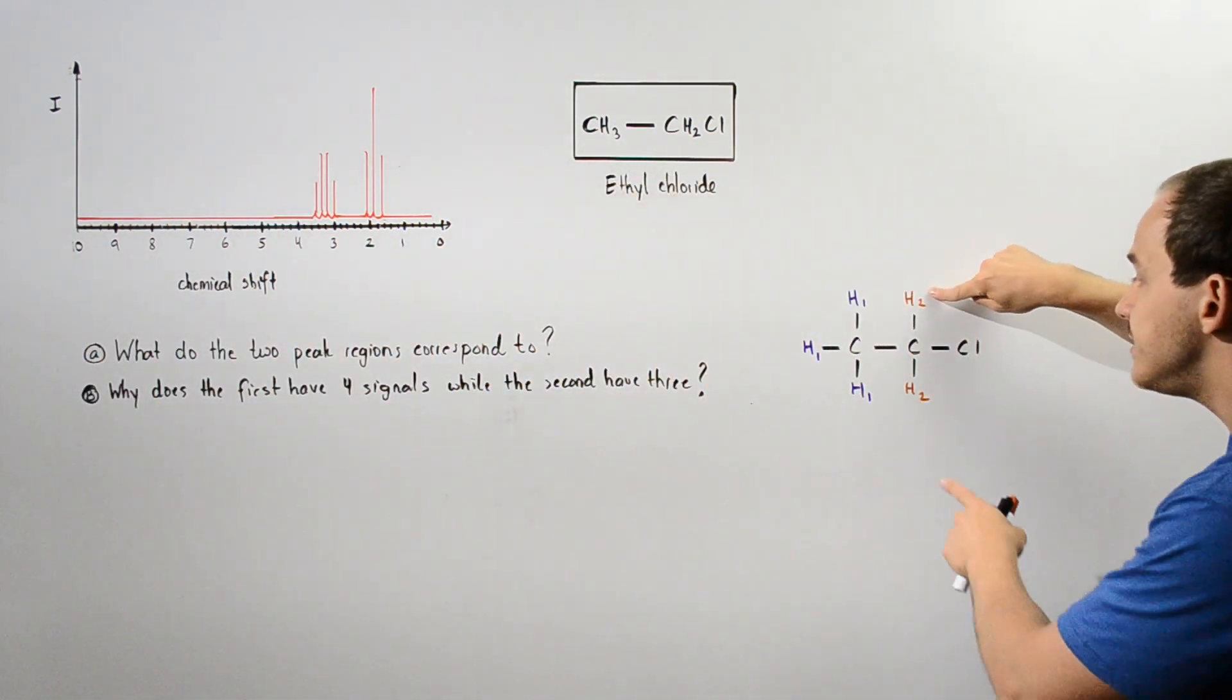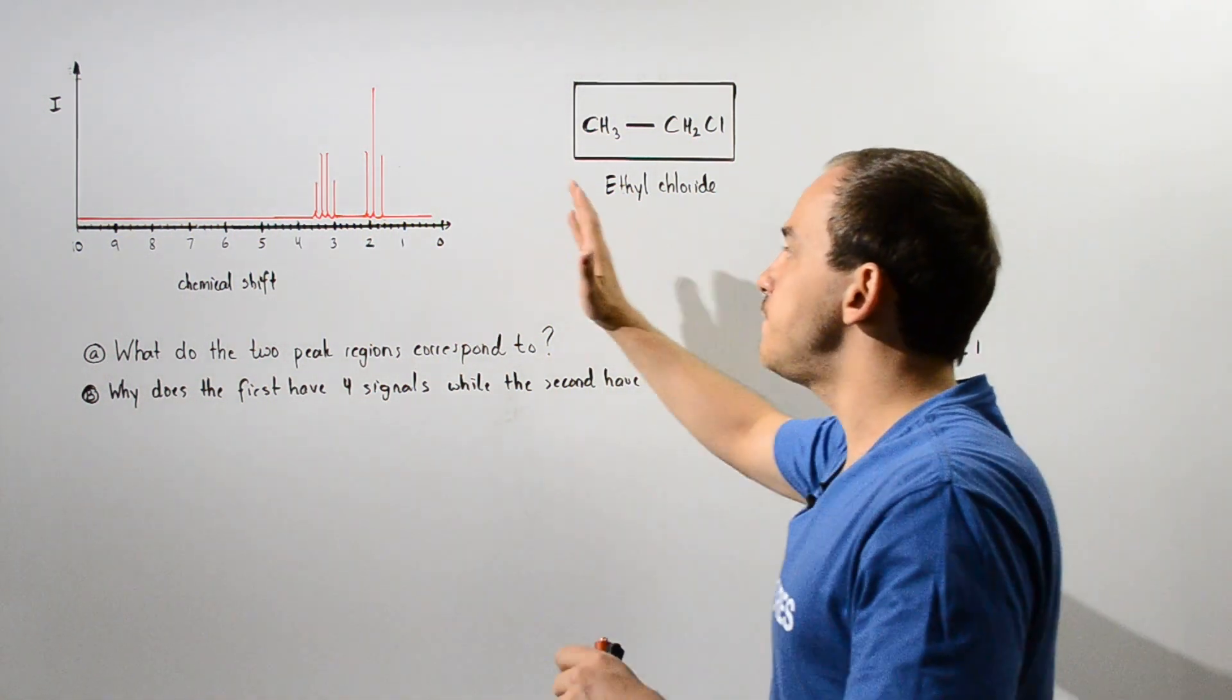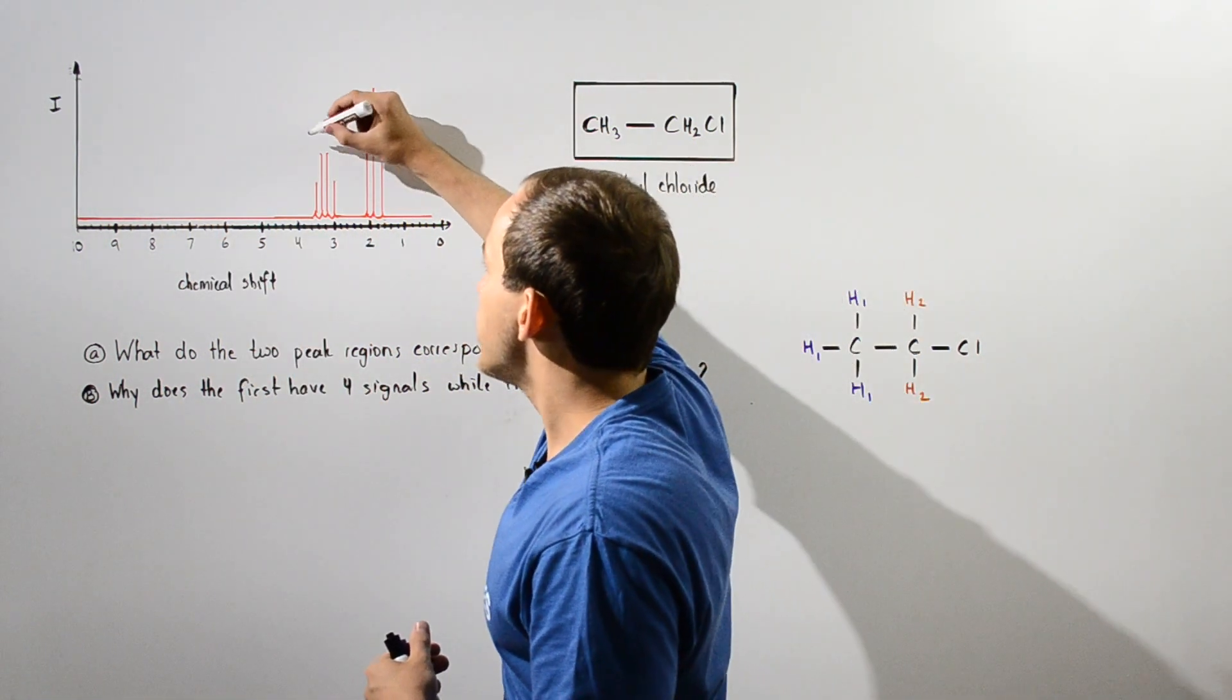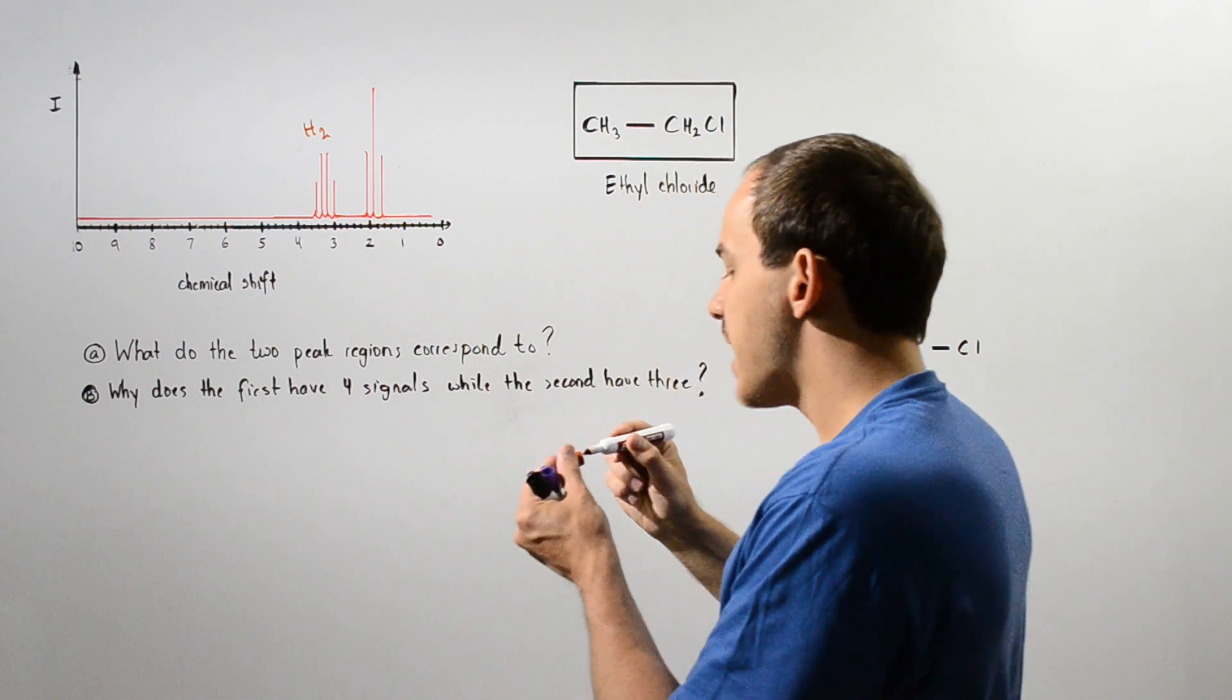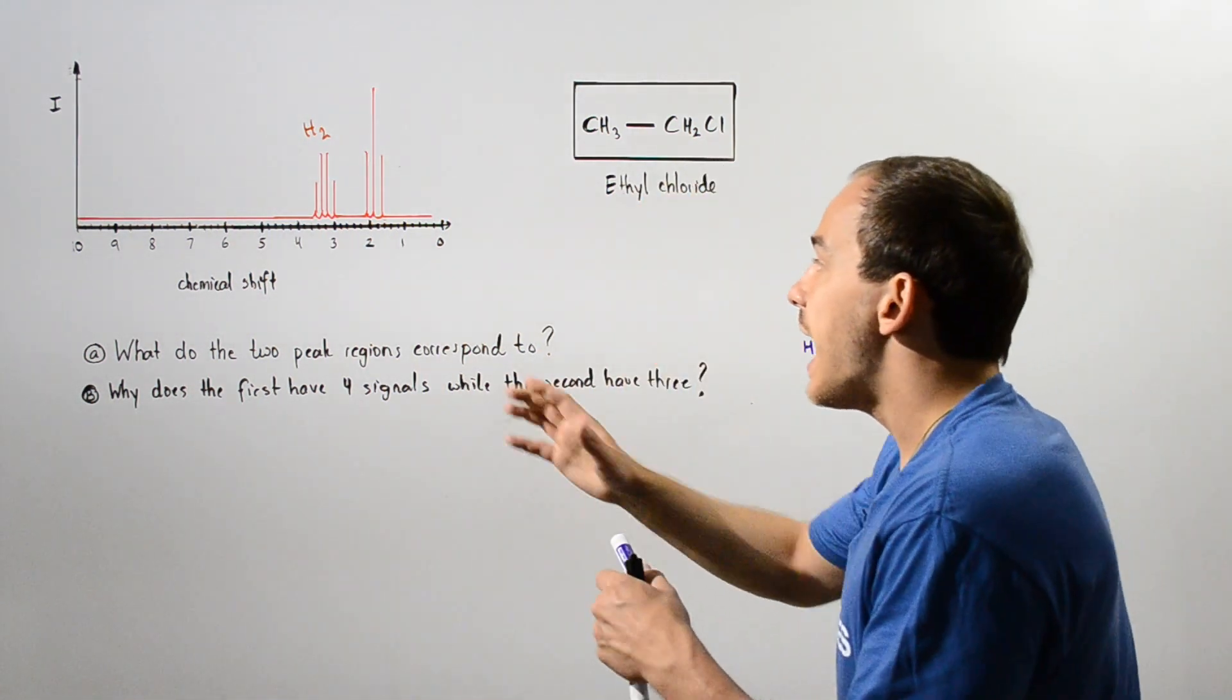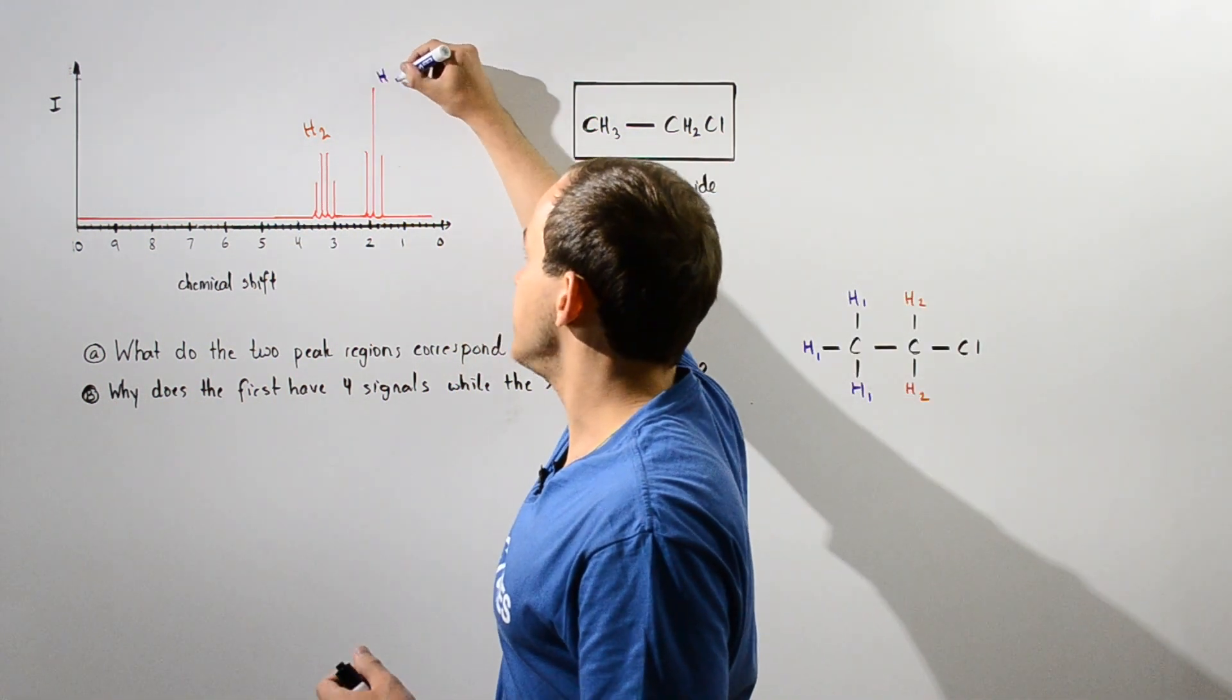So that means these H2 atoms which are less shielded should be found more to the left. So we're going to presume that this corresponds to H2, and that this, which has more shielding and should be more upfield, corresponds to this peak here.